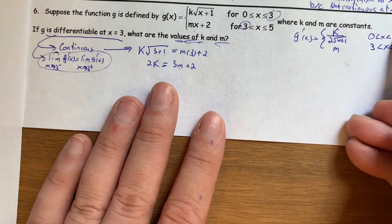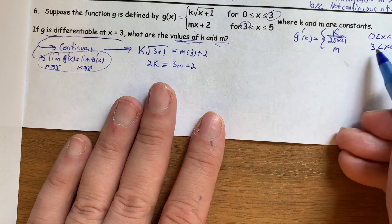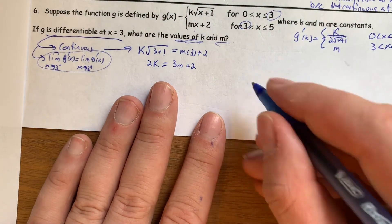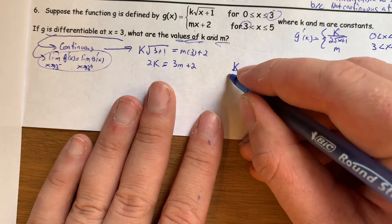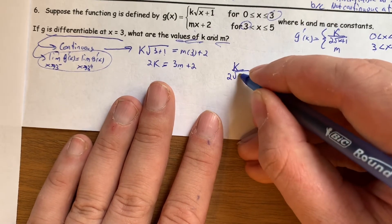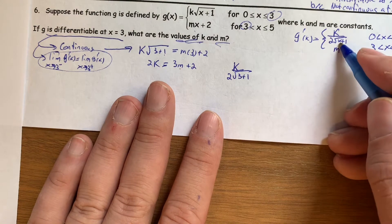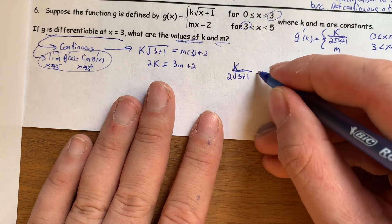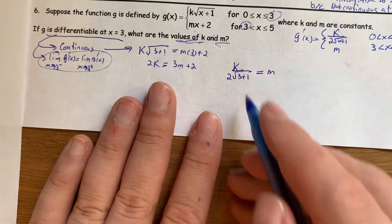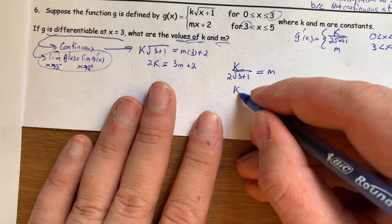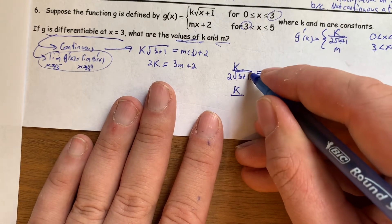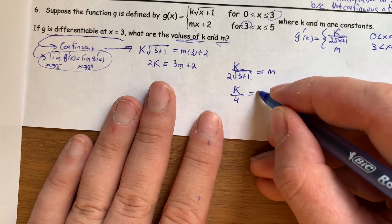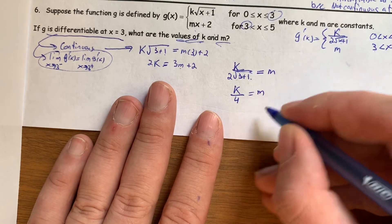So the limit as x approaches 3 from the left has to be equal to the limit as x approaches 3 from the right. And so we get k over 2 square root of 3 plus 1, I'm plugging in 3, the limit from the left is this, has to be equal to m, and this can simplify. So k over square root of 3, 3 plus 1 is 4, square root of 4 is 2, 2 times 2 is 4. k over 4 equals m, and now I have two equations.